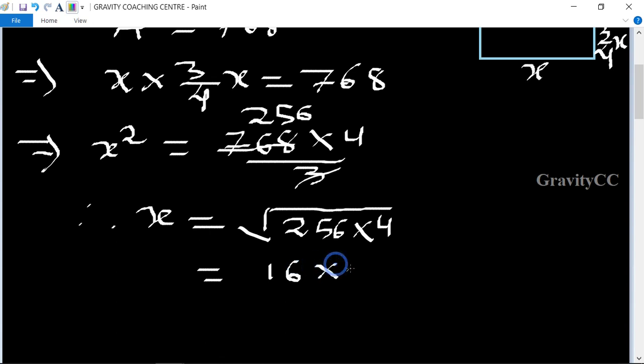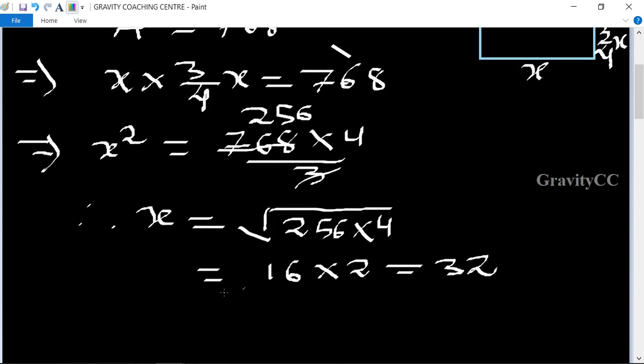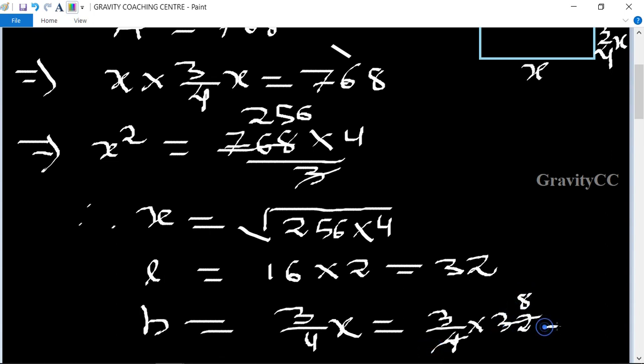Now we need to find the difference between the length and breadth. The breadth equals three-fourths of x, so breadth = (3/4) × 32. Calculating: 32 ÷ 4 = 8, and 8 × 3 = 24 meters. So the breadth is 24 meters.